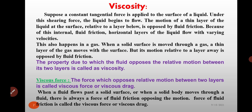Because of this internal fluid friction, horizontal layers of the liquid flow with varying velocities. This also happens in a gas. When a solid surface is moved through a gas, a thin layer of the gas moves with the surface. But its motion relative to a layer away is opposed by a fluid friction.